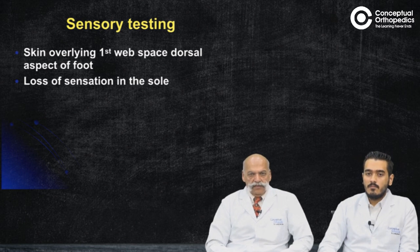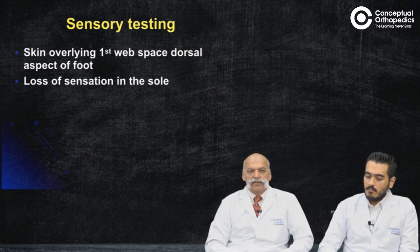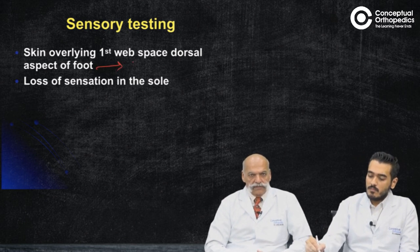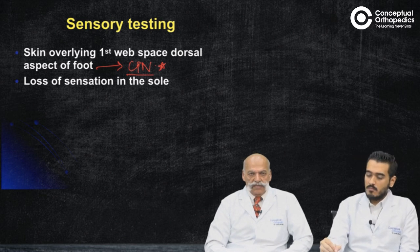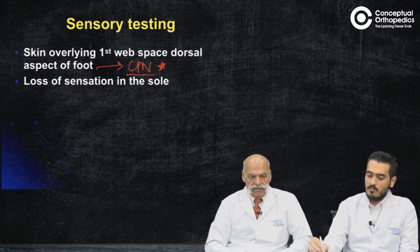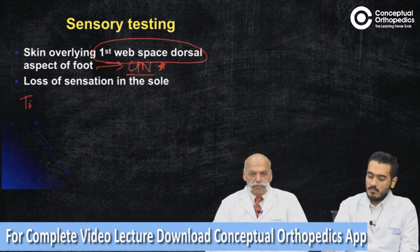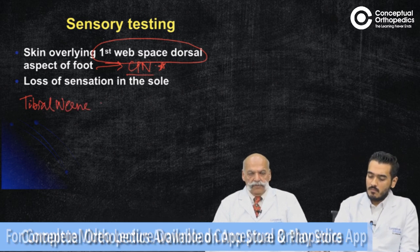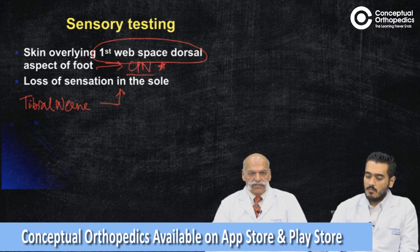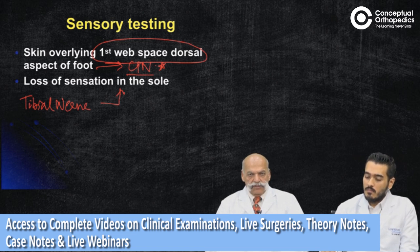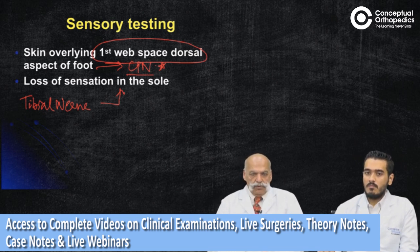Once motor testing is accomplished, it is time for sensory testing. The dorsal aspect of the foot is supplied by the common peroneal nerve, but the more important sensory deficit in a foot drop case is assessed by testing sensation over the first dorsal web space. As far as the tibial nerve is concerned, it is responsible for sensation in the sole. Do not forget to examine sensation in the sole, as there will be cases where both the tibial and common peroneal nerve are involved but the patient presents only as a foot drop case.